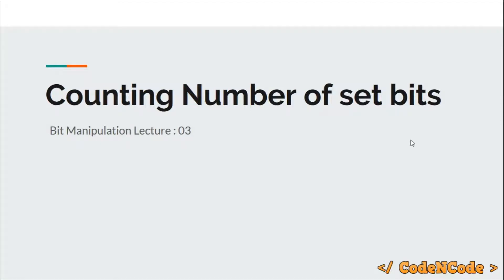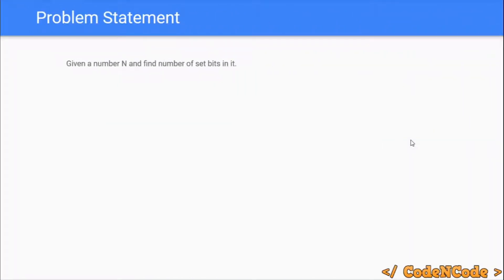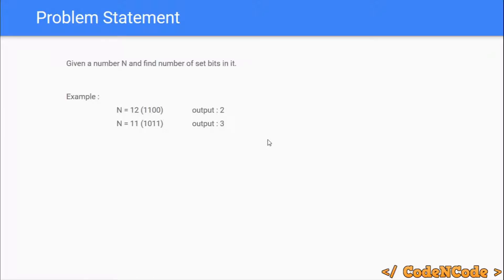Hello guys, this is CodeEncode and this is the third lecture of this bit manipulation series. In this lecture we are going to see how we can count the number of set bits in a given number. The problem is: you are given an integer n and you have to find the number of set bits in the binary representation of this number. For example, if n is 12 the output would be 2, because in the binary representation of 12 there are 2 set bits. For 11 the output should be 3 because in the binary representation of 11 there are 3 set bits.